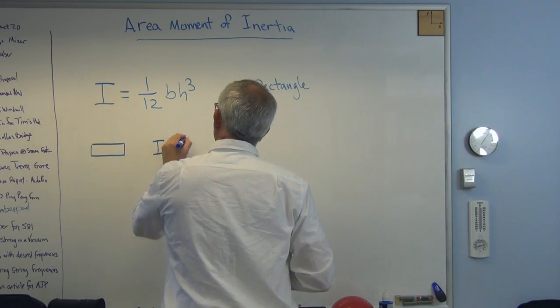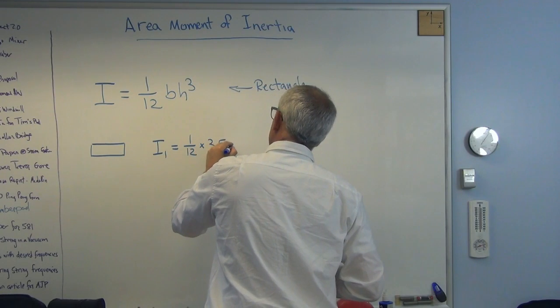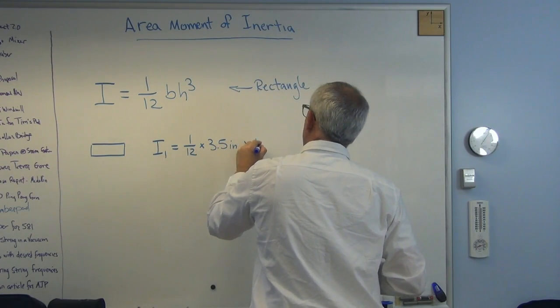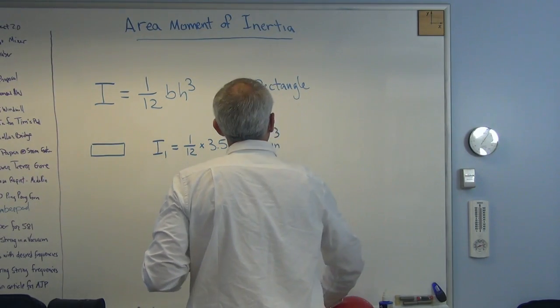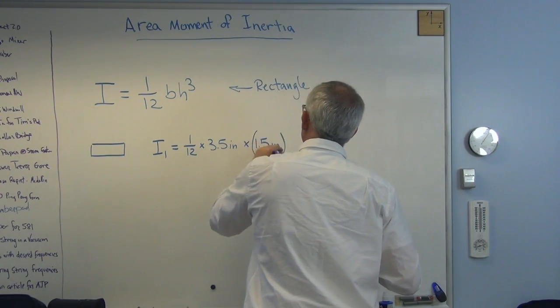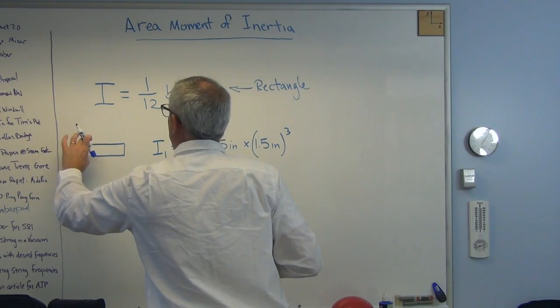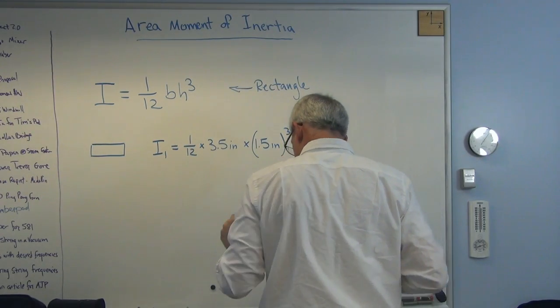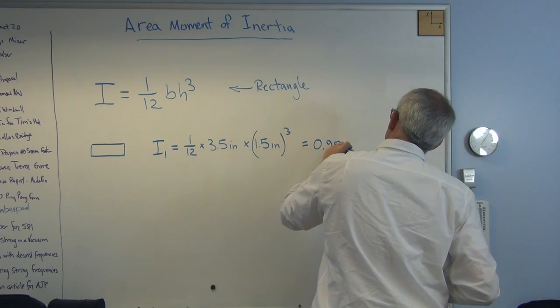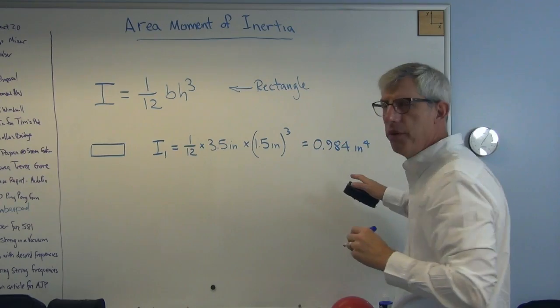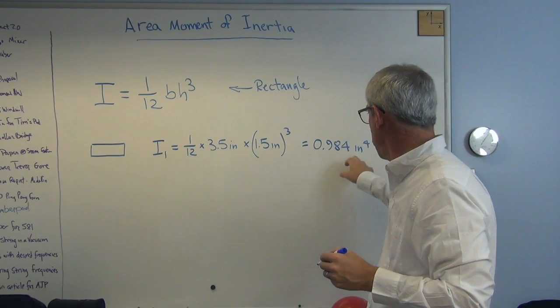I'll call that I1. That's 1/12. B is now going to be 3.5 inches times 1.5 inches cubed. I want to make this clear that that's not inches cubed. And that's because this is 3.5, that's 1.5. And if you crank that out, you get 0.984. And the units are inches to the fourth, kind of an odd unit. But that's what you get when you have a distance times a distance cubed.